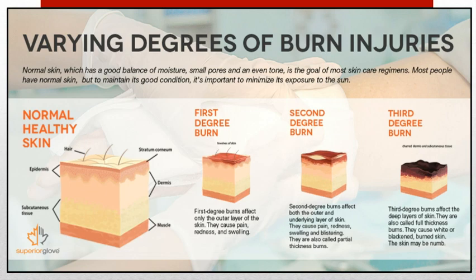First degree burns affect only the outer layer of the skin and cause pain, redness, and swelling. Second degree burns affect both the outer and the underlying skin layer, causing pain, redness, swelling, and blisters. They are also called partial thickness burns.